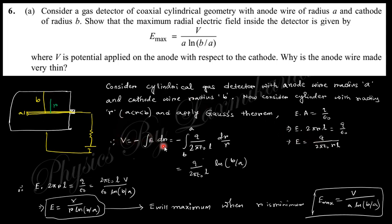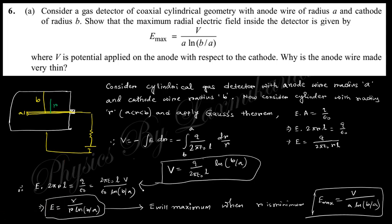To find the potential V, we integrate V = ∫E·dr. Substituting the expression for E and integrating, we get V in terms of q, ε₀, and the geometry. From this, q equals 2πε₀l times V divided by ln(b/a). Substituting back, E equals V divided by r·ln(b/a). The electric field is maximum when r is minimum, and the minimum r is a — charges cannot penetrate into the anode wire — so the maximum electric field is E_max = V / [a·ln(b/a)].